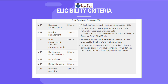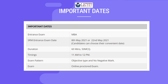For the SRM JEE management exam, you need to score at least a minimum of 60%. The important dates for the SRM entrance exam — SRM JEE — are 8th May 2021 and 22nd May 2021, and students can choose their date. This is an online proctored exam with objective type questions and negative marking.